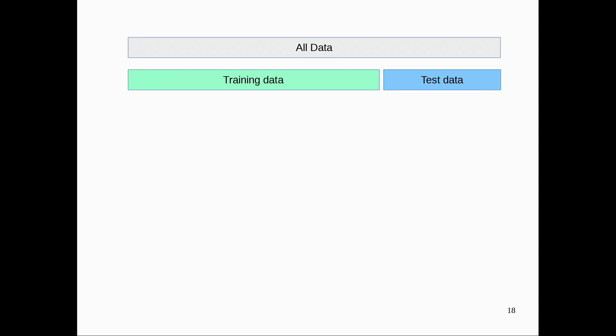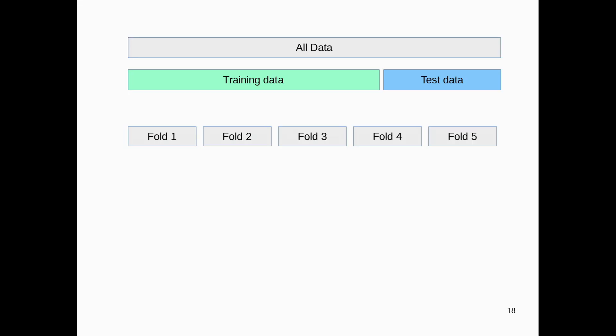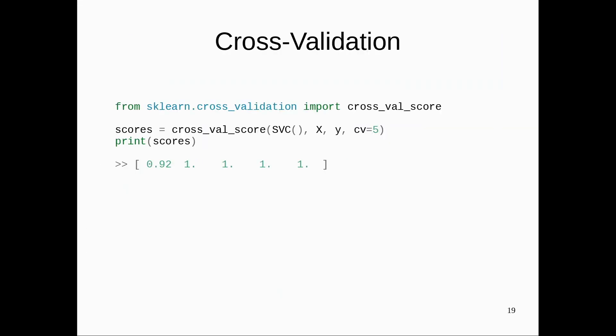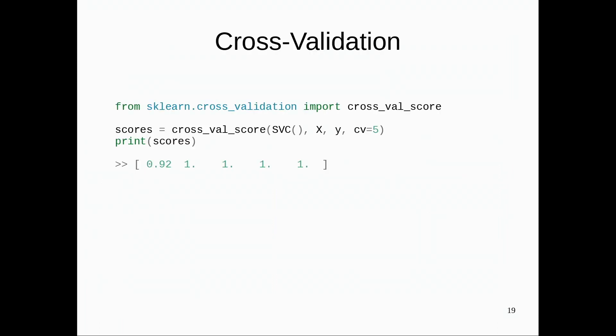So there's tools to do train-test-split, which is very simple. I'm not actually going to talk about this, but often instead of doing a train-test-split, you want to use cross-validation. I think you're all familiar with cross-validation, so maybe I can skip this, where you split your data in five folds, and you hold out one fold and train on the other ones. And this gives you a more robust estimate of the generalization performance of your model.